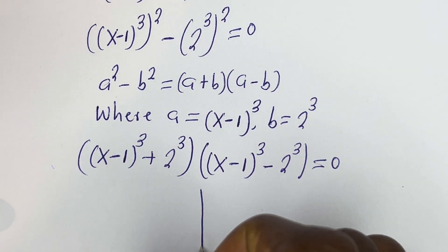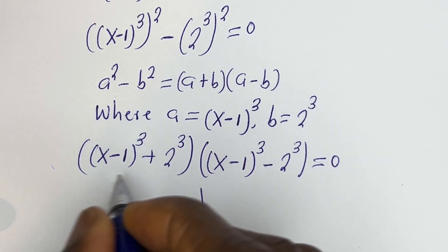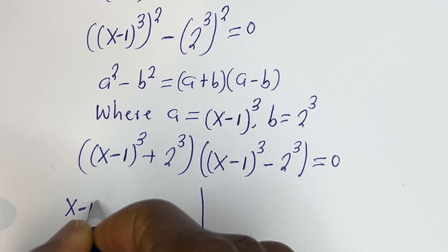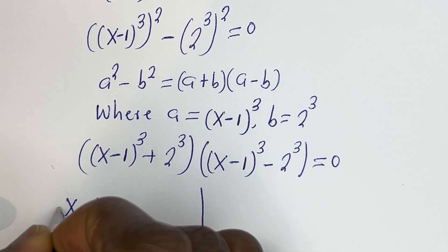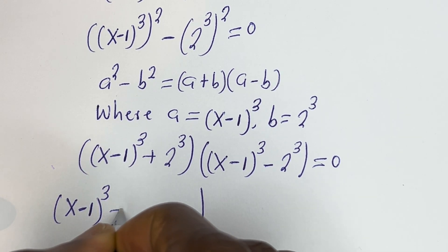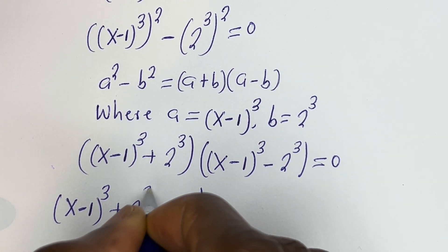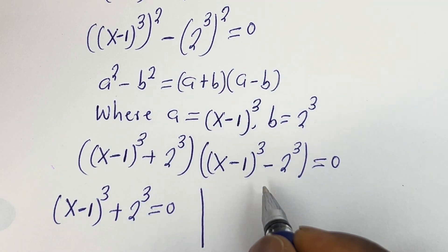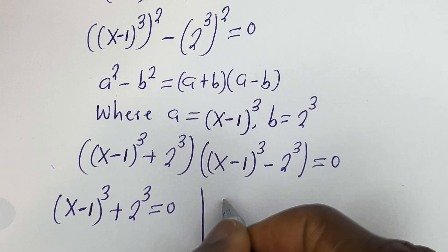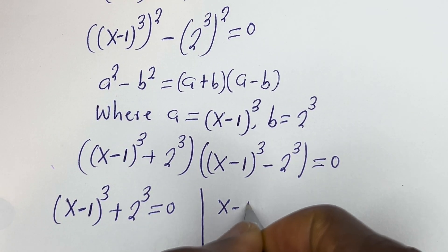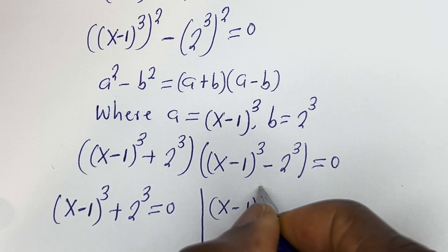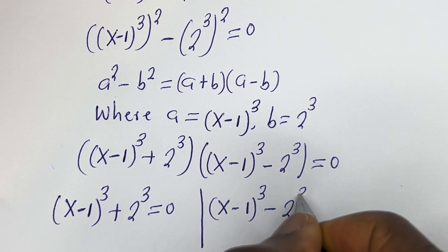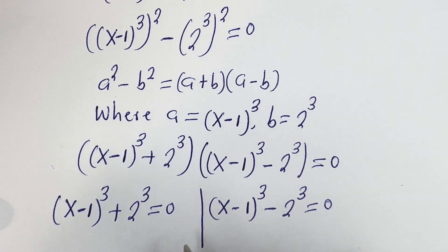There are two cases here. The first case is (x minus 1)^3 plus 2^3 is equal to 0. And the second case is (x minus 1)^3 minus 2^3 is equal to 0.